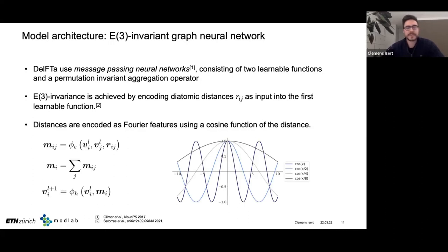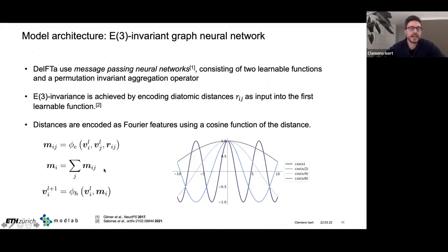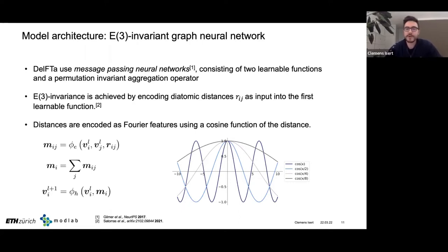In the message-passing scheme, we use atomic distances as edge features and atom type as node features, computing directed messages on a fully connected graph. We aggregate messages per node and update node features based on previous node features and aggregated messages. In the readout phase, for extensive global properties like formation energy we use sum pooling; for intensive properties we use mean pooling; and for local properties — charges and bond orders — we use their respective node and edge features to predict those local quantities.